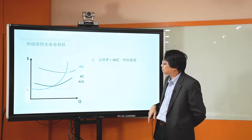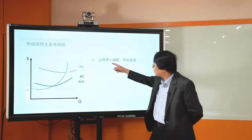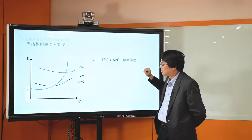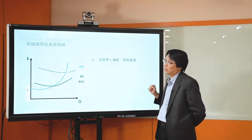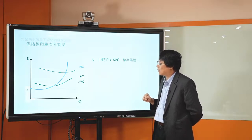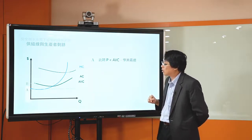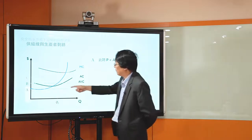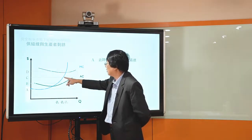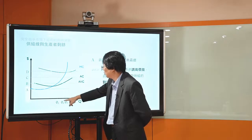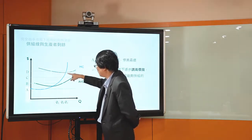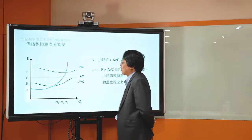如果P比AVC還小，就是你連負擔變動成本都不夠，這時候就不要再撐下去了。所以短期廠商看兩個條件：P等於MC決定最適產量，P和AVC之間的關係決定是否立即停業。根據這兩個條件，我們就可以導出不同價格之下，廠商願意且能夠提供的數量，這就是供給線。